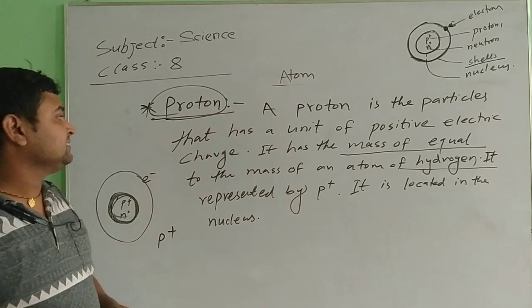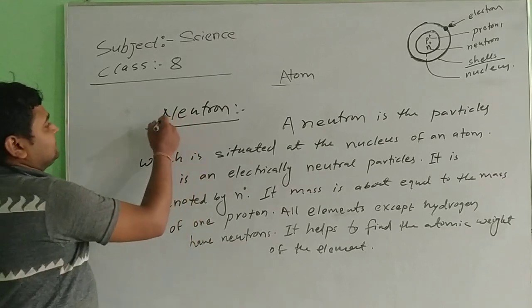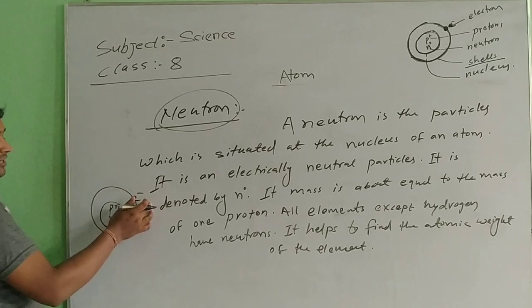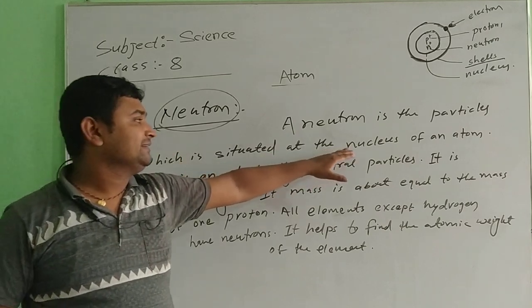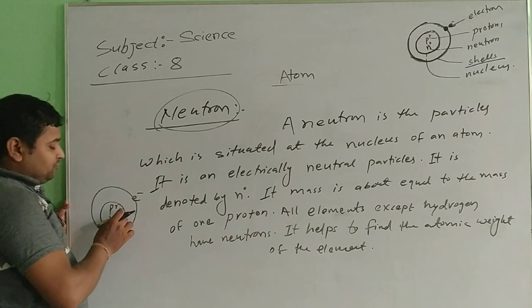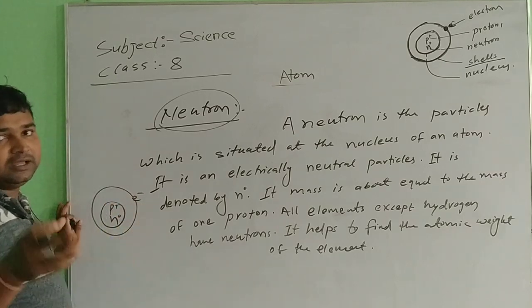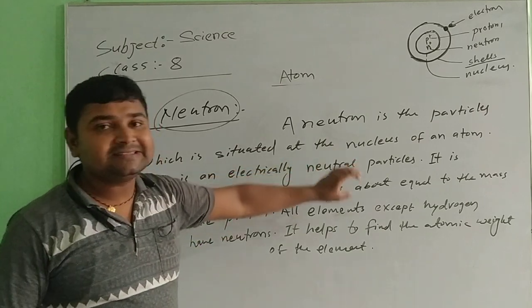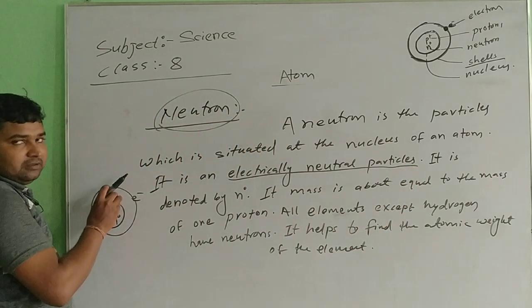The last one is neutron. In the atomic structure, you have seen that the neutron is inside the nucleus. The neutron is a particle which is situated at the nucleus of an atom. Inside this nucleus there are proton and neutron. This is the nucleus of an atom. The neutron is an electrically neutral particle — unlike the proton which has a positive charge and the electron which has a negative charge.